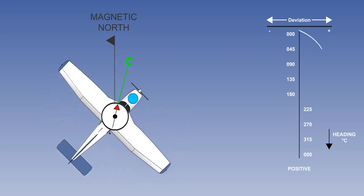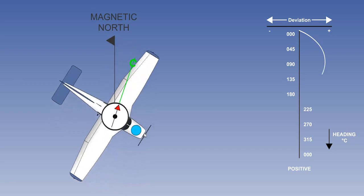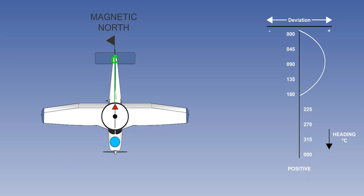If we turn the aircraft onto a compass heading of 045 degrees, the blue pole is now out to the east of magnetic north, so the compass needle will be deviated to the east. As the aircraft turns onto a compass heading of 090 degrees, the blue pole is even further out to the east, and the deviation effect has increased to a maximum. Continuing to turn onto a compass heading of 135 degrees, the blue pole is far less out to the east and the deviation has reduced accordingly. When the aircraft turns onto a compass heading of 180 degrees, the blue pole is directly opposite magnetic north, but because its effect is less than the Earth's magnetic field, there will be no deviating effect.